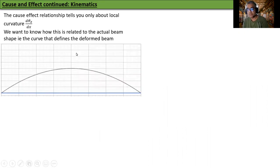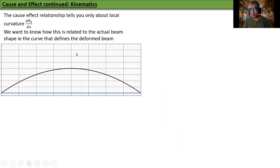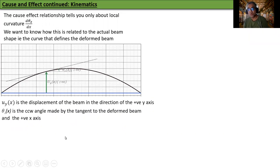So here's the original beam and there's a deformed beam. Original beam is in blue, deformed beam is in black. UY is the displacement of the beam in the direction of the positive y-axis. Theta z is the counter-clockwise angle made by the tangent to the deformed beam and the positive x-axis.